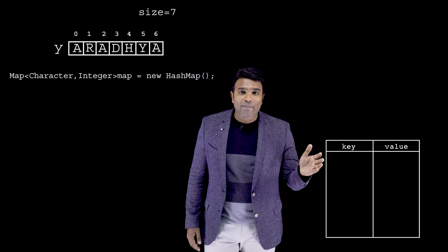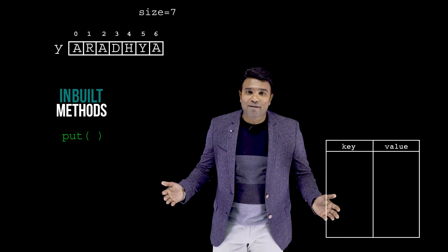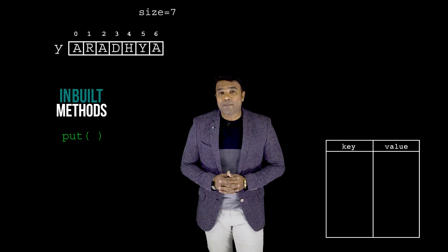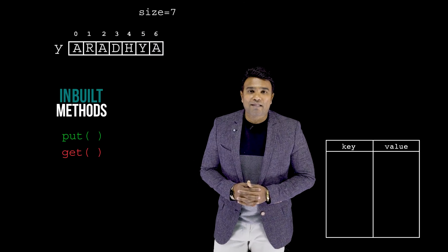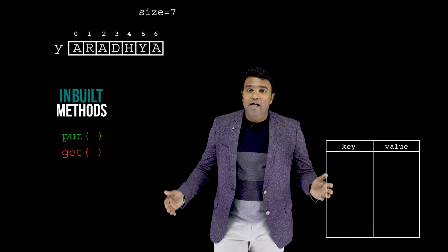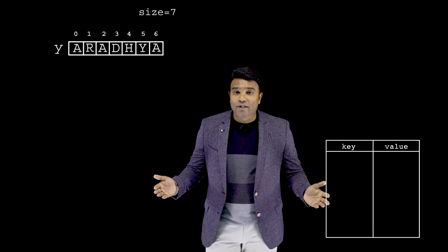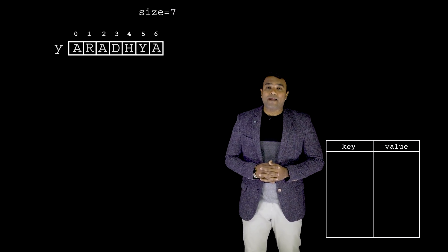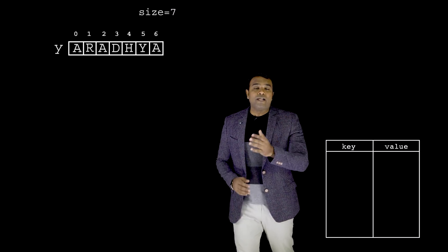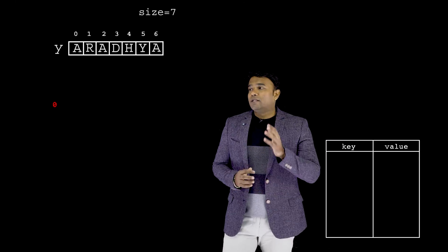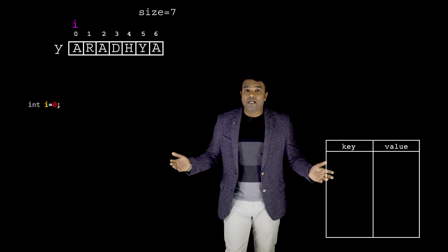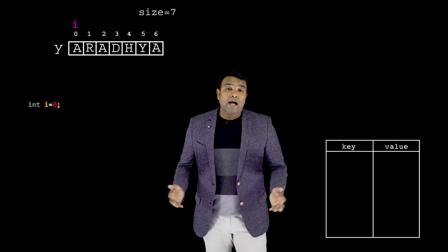To fill data into the map, I can use the put inbuilt method. To take out anything from the map, I can use the get inbuilt method. Since my data is present inside an array, I need a loop. I create a loop index variable called 'i' and initialize it to zero. The condition 'i not equal to size' ensures I travel along the entire length of the array.